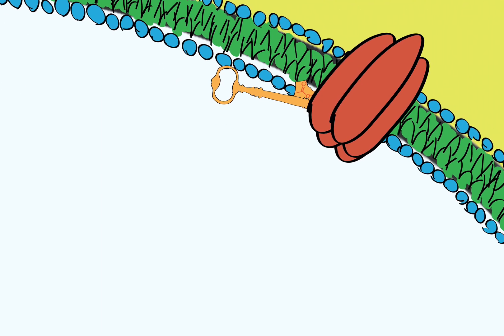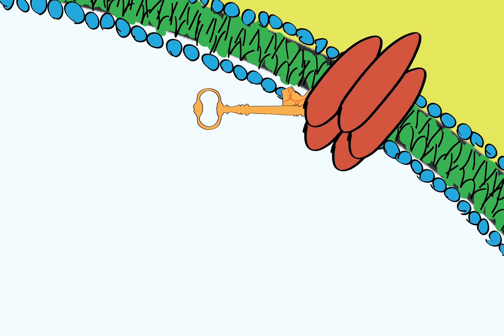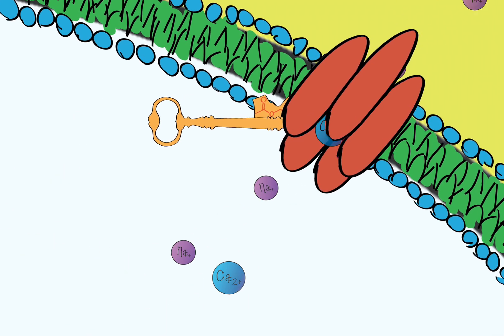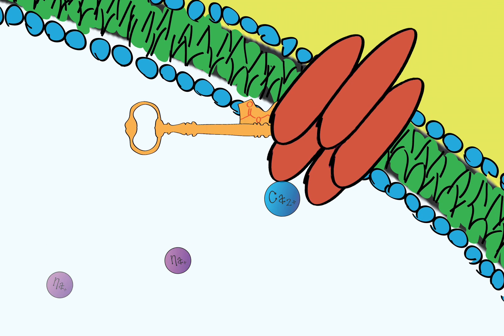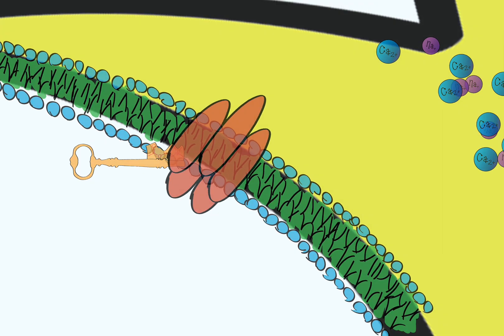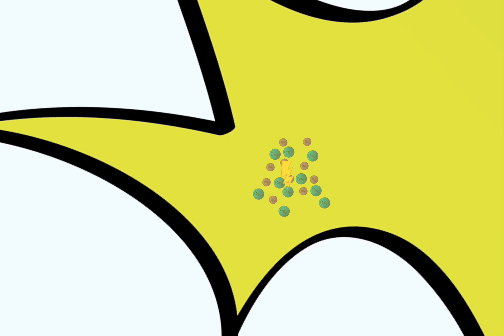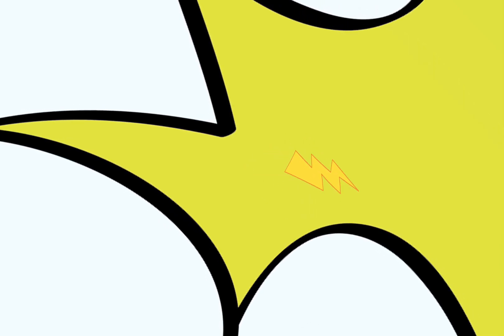Like a key opening a door, once the receptor binds its neurotransmitter, a pore opens in the receptor protein complex that allows charged ions from outside the cell to flow in. The difference in charge generated by this ionic movement can trigger an electrochemical signal to propagate throughout the cell, which again ends in neurotransmitter release at the terminal.